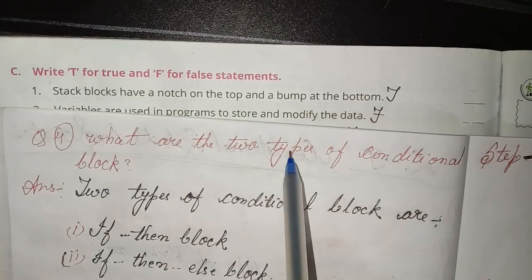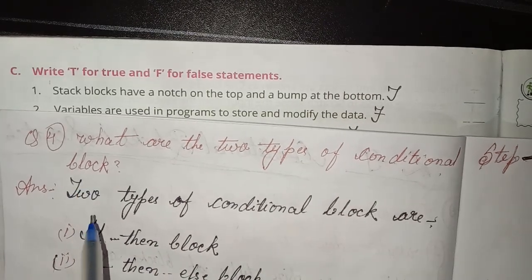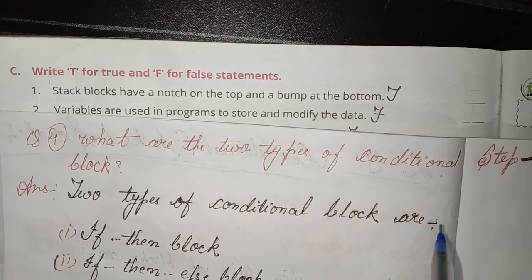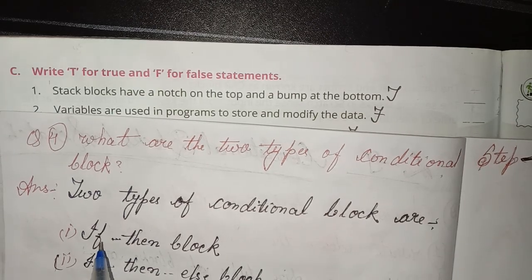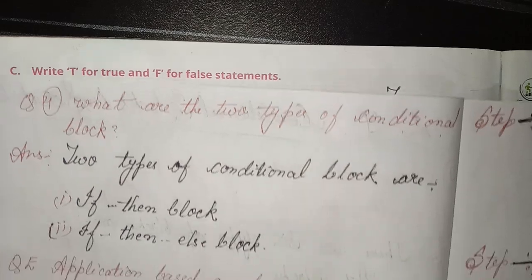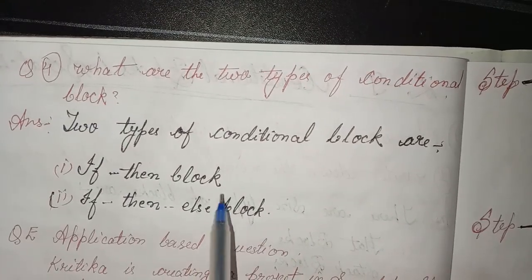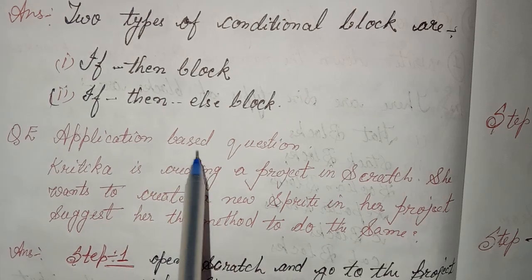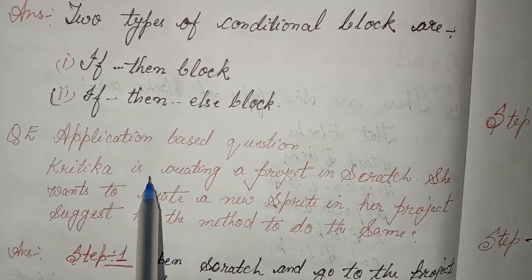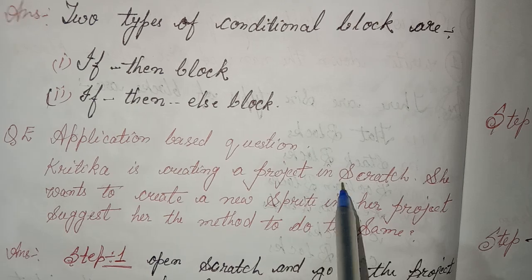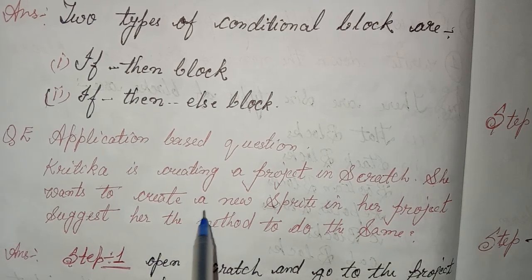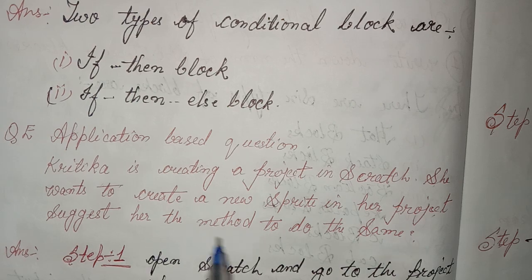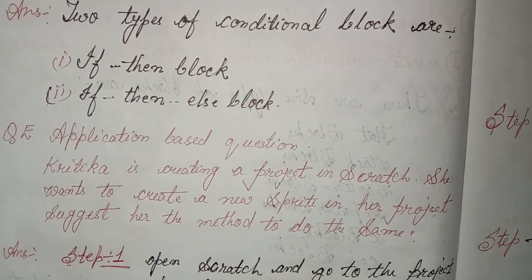4. What are the two types of conditional blocks? Answer: The two types of conditional blocks are the if-then block and the if-then-else block. Application-based question: Kritika is creating a project in Scratch. She wants to add a new sprite to her project. Suggest her the method to do the same.